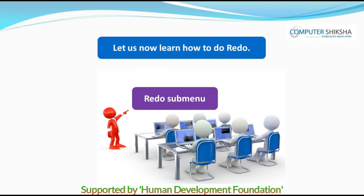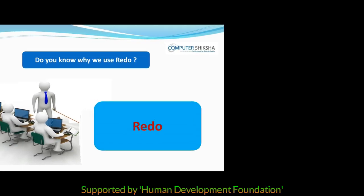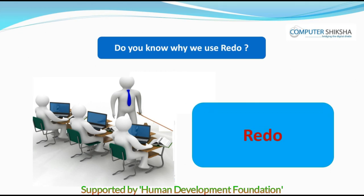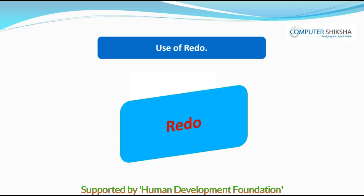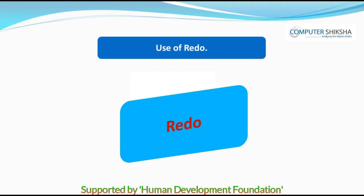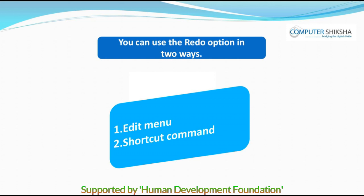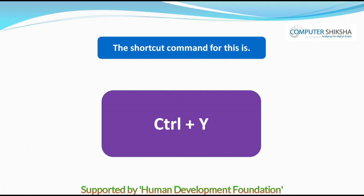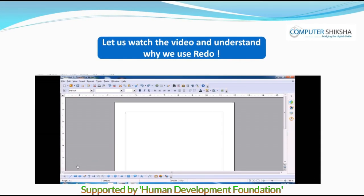Let us now learn how to do Redo. Do you know why we use Redo? Redo is just the opposite of Undo. Whatever text or pictures you remove by doing Undo, you can bring them back with the help of the Redo command. Redo can also be used in two ways: from the Edit menu or by using the shortcut command Control plus Y.